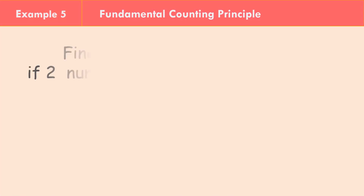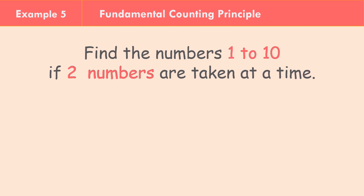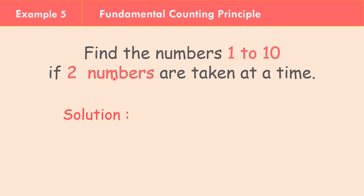For question number five, from the numbers one to ten, if two numbers are taken at a time, how many outcomes are there? We have ten numbers. For the first decision we have ten choices; once one is chosen, we have nine choices left. So 10 × 9 = 90.